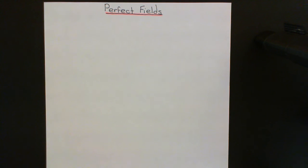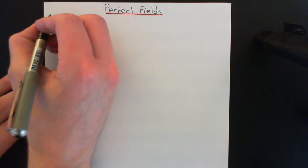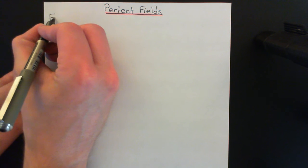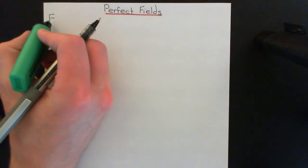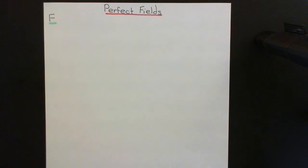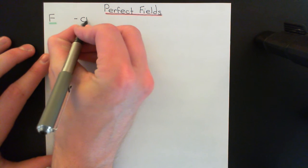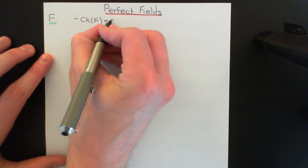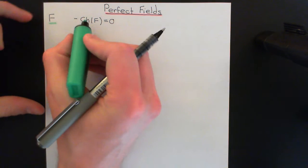We'll begin with the definition of a perfect field. A perfect field is a field that obeys one of two criteria — you only have to obey one of them. A perfect field is a field that either has characteristic equal to zero. If the characteristic of the field is zero, that's enough to be given the title of a perfect field.